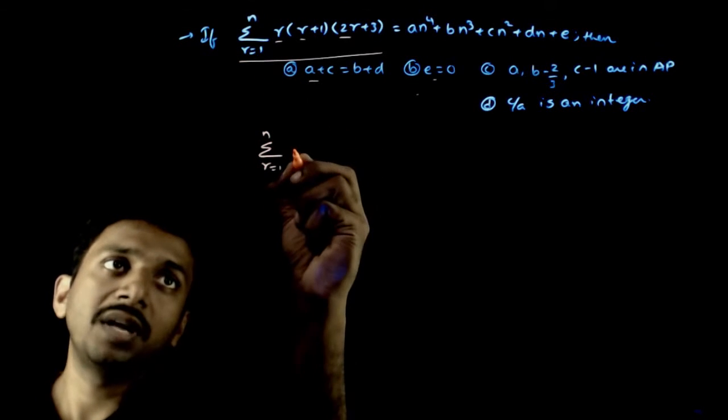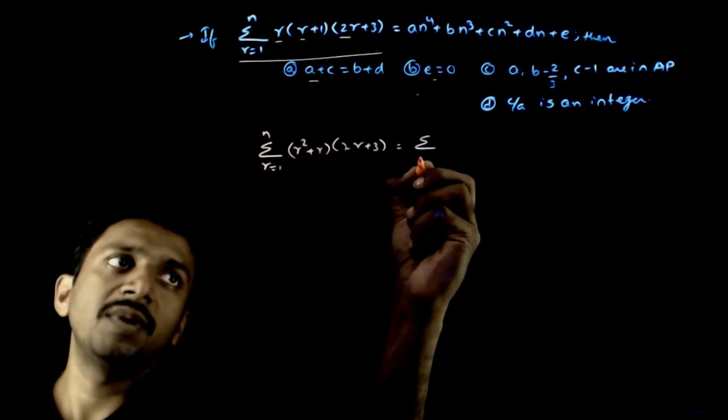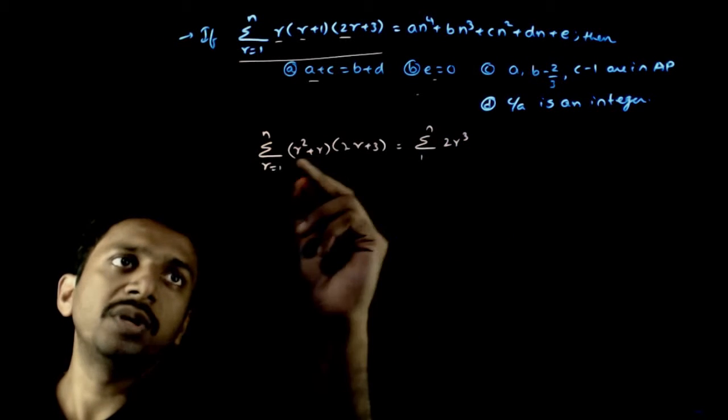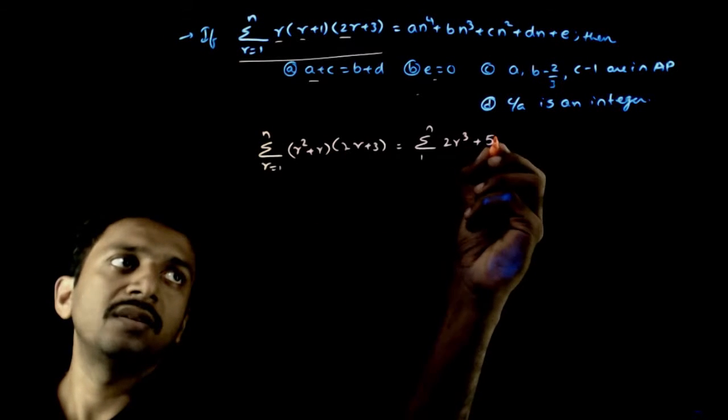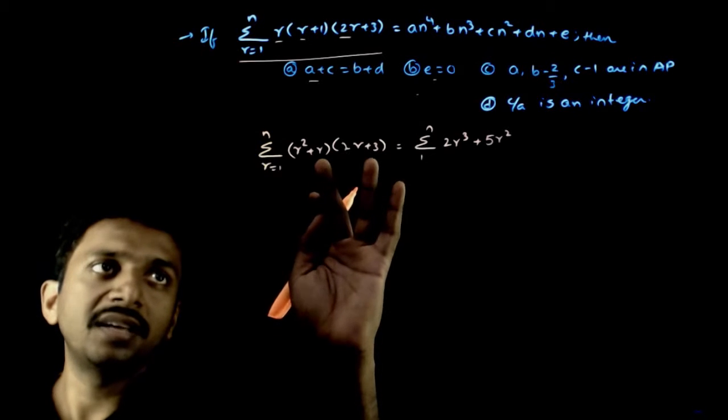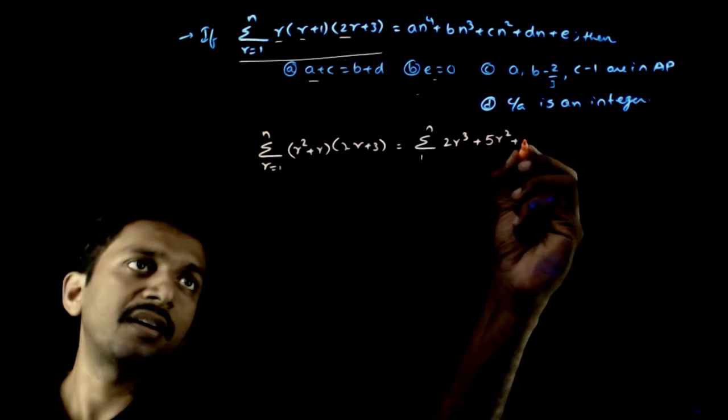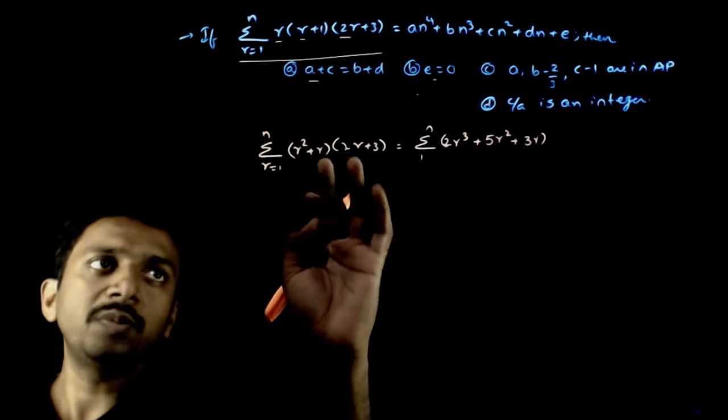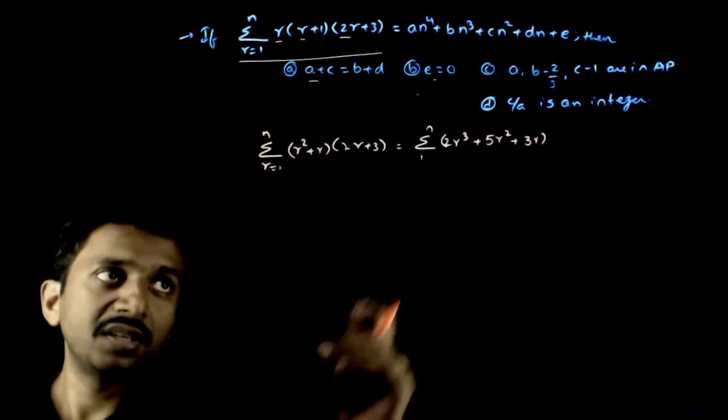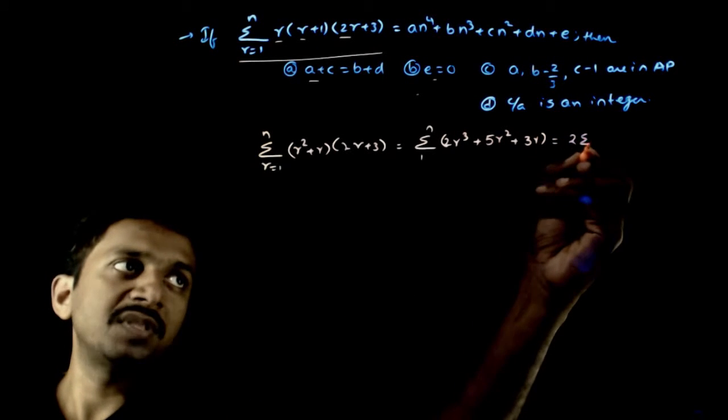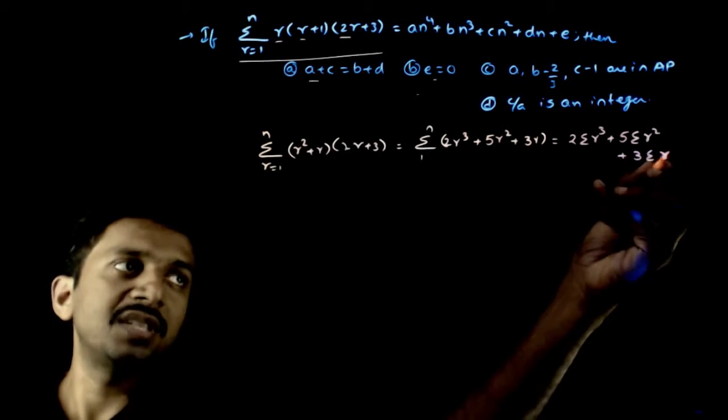Sigma r equals 1 to n, if I expand this, you get r square plus r times 2r plus 3, that equals sigma 1 to n, 2r cube plus r square, you get 2r square plus 3r square, 5r square, and you get 3r. So 2r cube plus 5r square plus 3r.